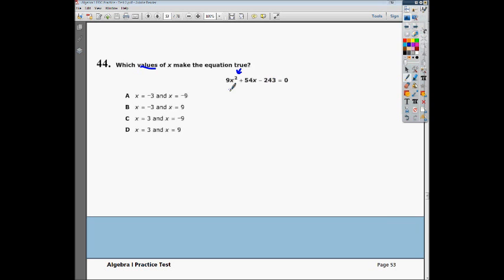So if I pulled out a 9 from every single one of these, this would become x squared, because 9 divided by 9 is 1, so technically there's a 1 that's there. 54 divided by 9 is going to be 6. And then negative 243 divided by 9 is negative 27.